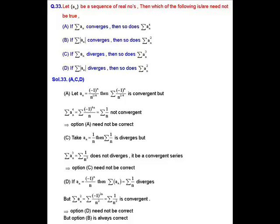Now we check options A, C, and D. In option A: if summation a_n is convergent, does summation a_n⁴ also converge? This is incorrect. If we take a_n = (-1)^n / n^(1/4), then summation (-1)^n / n^(1/4) is convergent by the Leibniz alternating series test, but a_n⁴ gives summation 1/n, which is clearly divergent. So option A is not true.